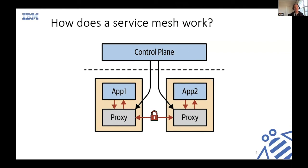How does a service mesh work? The proxy that sits alongside your application container is the key piece. The bottom layer is called the data plane, where the proxy helps you mediate the traffic. Instead of having app one talk directly to app two, the proxy facilitates that communication. Think of it as a facilitator to a conference session — it determines whether the communication should be allowed, whether the connection should be upgraded to mutual TLS, and which endpoint of app two app one should talk to.